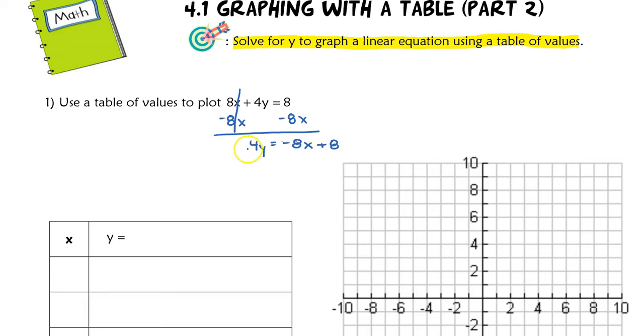Now I have to get rid of that 4 in front of the y, so I'm going to divide by 4. So I divide by 4 everywhere here, and I'm left with y equals negative 8 divided by 4 is negative 2x, and then 8 divided by 4 is positive 2, so I'll write plus 2. So this is the equation that I'm going to use now in my table. So the very first thing you have to do is solve for y. You have to make sure you have y alone by itself so that you can put it right into here in our table.